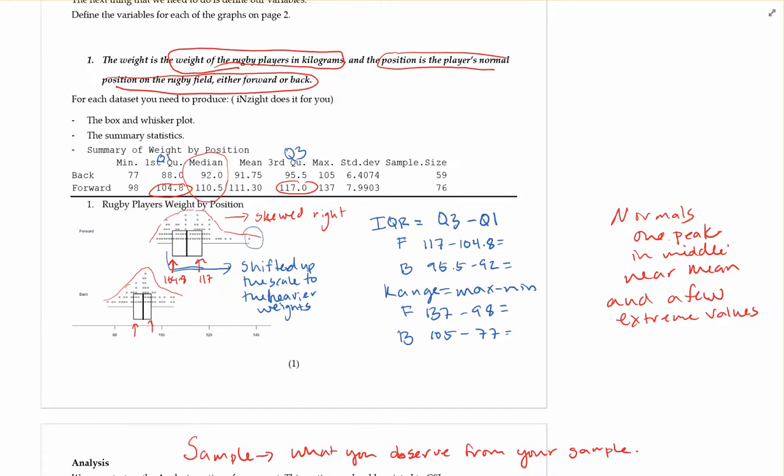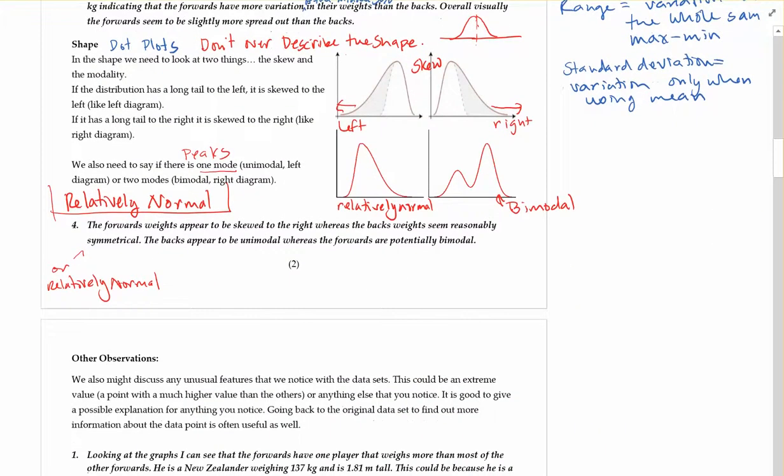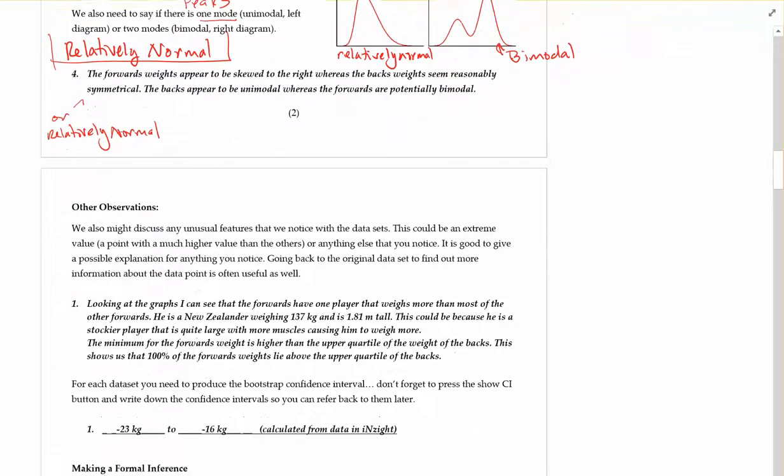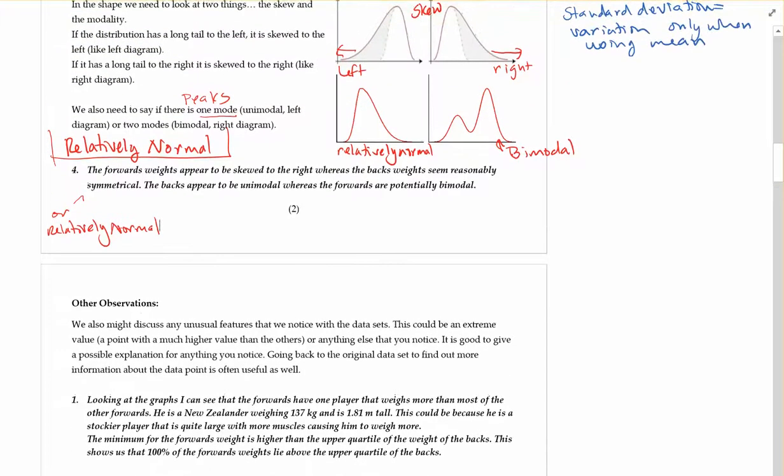Like two distinct modes, two distinct peaks. Or something skewed to the left or right or a normal situation. And the last one that we can look at is other observations. This sometimes comes back into the shape stuff. So any unusual features that we notice on the data sets. Could be outliers or extreme values. Or anything else that we notice. Like two big peaks. If it was bimodal we could talk about the bimodal.